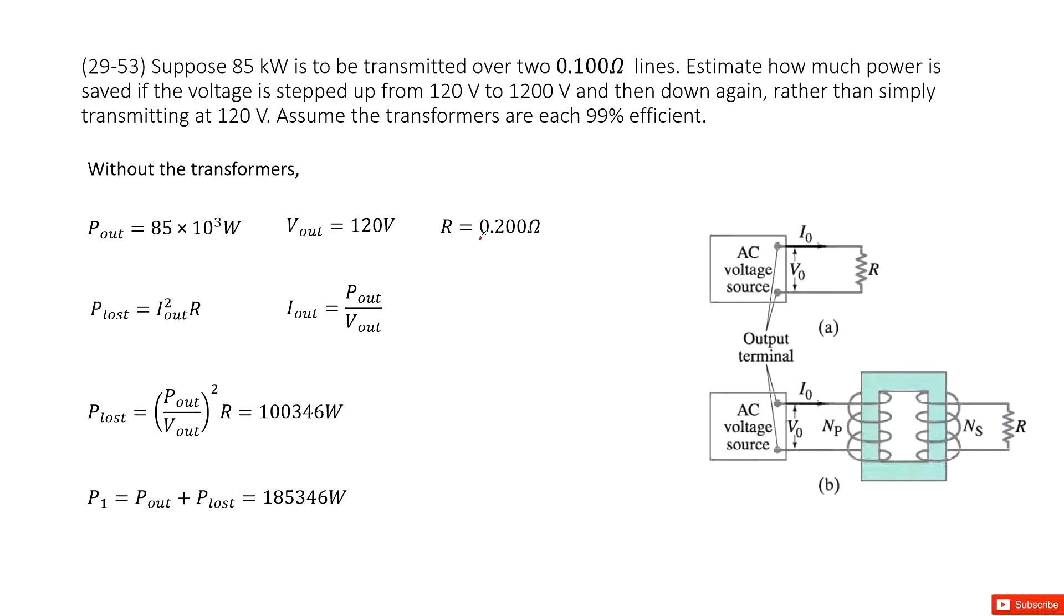And then we know the resistor is 0.2 ohms. Each line is 0.1, so total resistance 0.2.